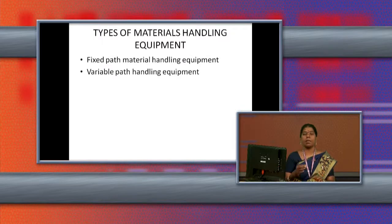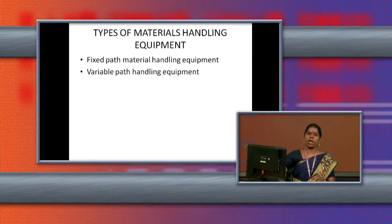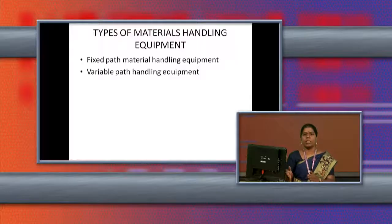Variable path material handling equipment means if we want to move our products outside the organization or to the top floor, we need variable path equipment. Variable path means we can change the pathway — the way can be changed from one direction to another. That is variable path material handling equipment.